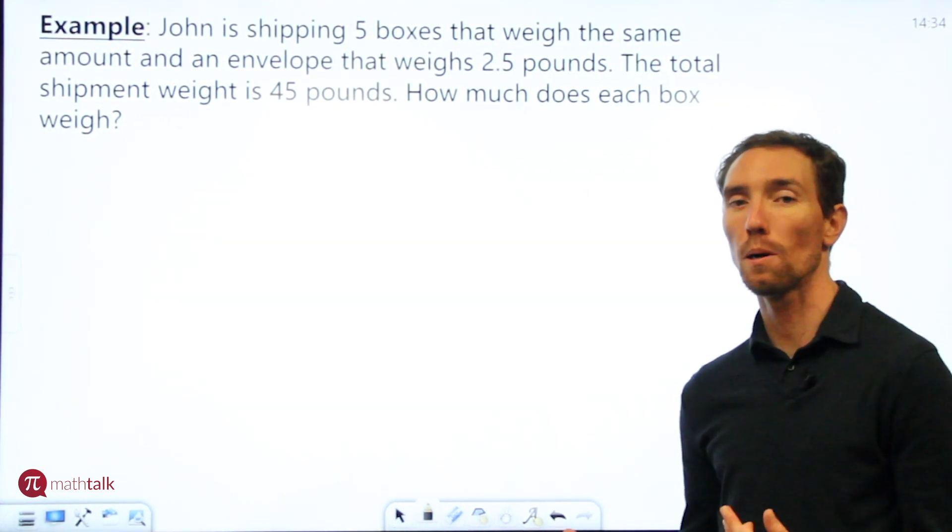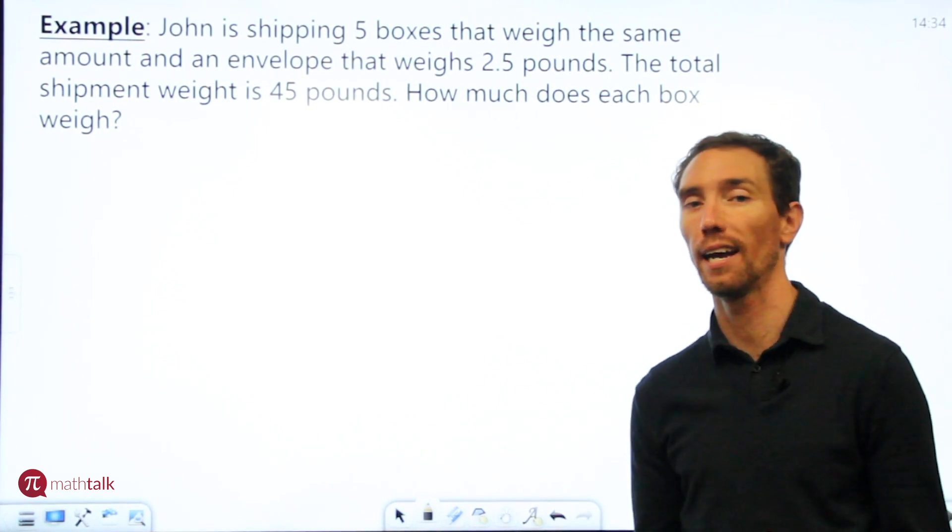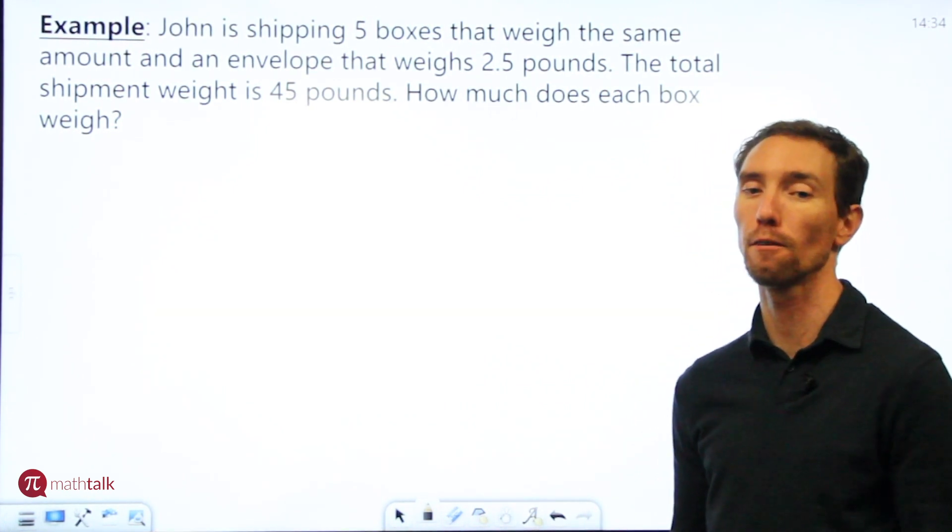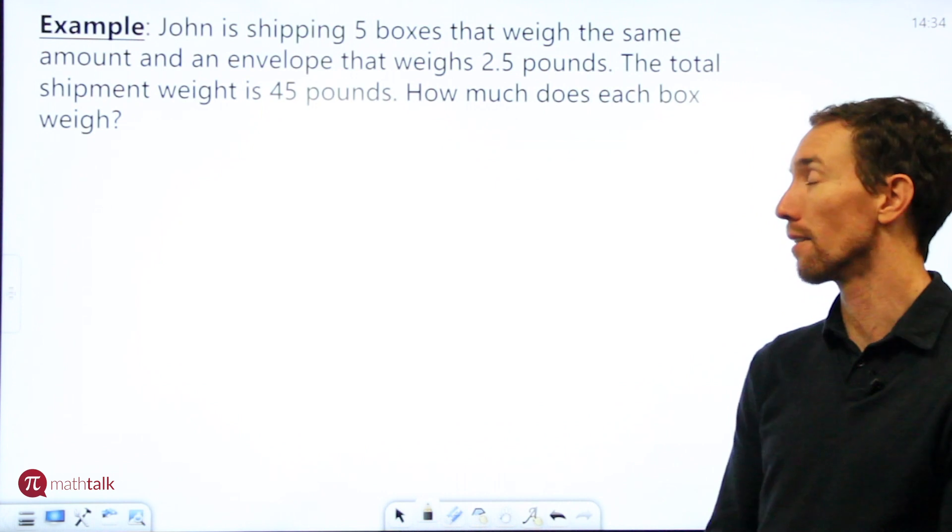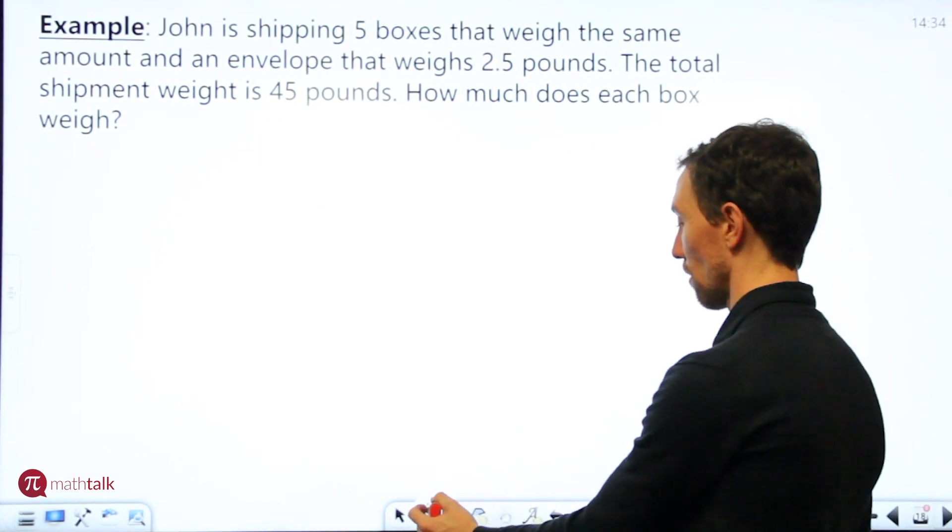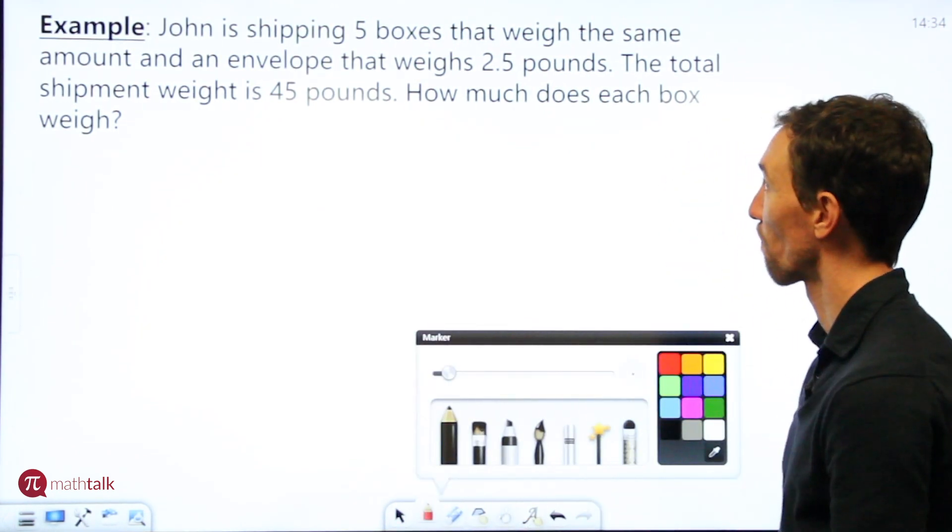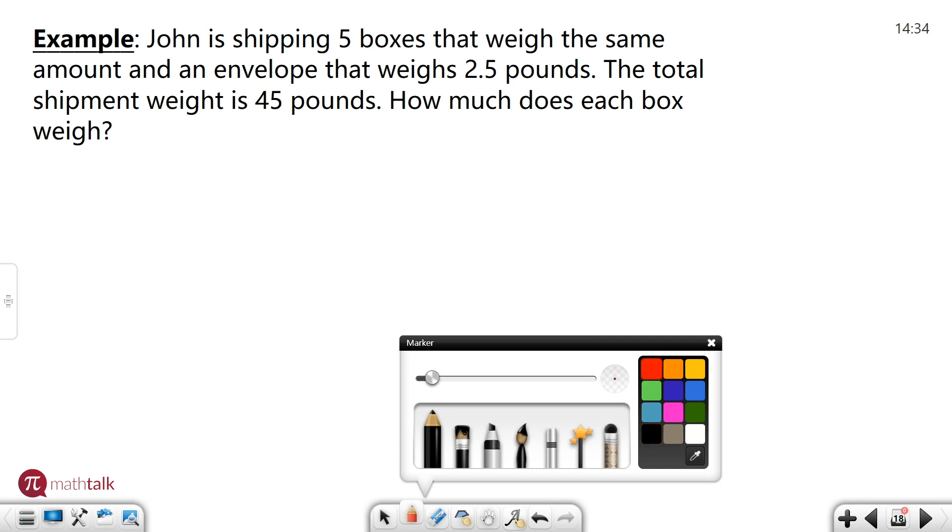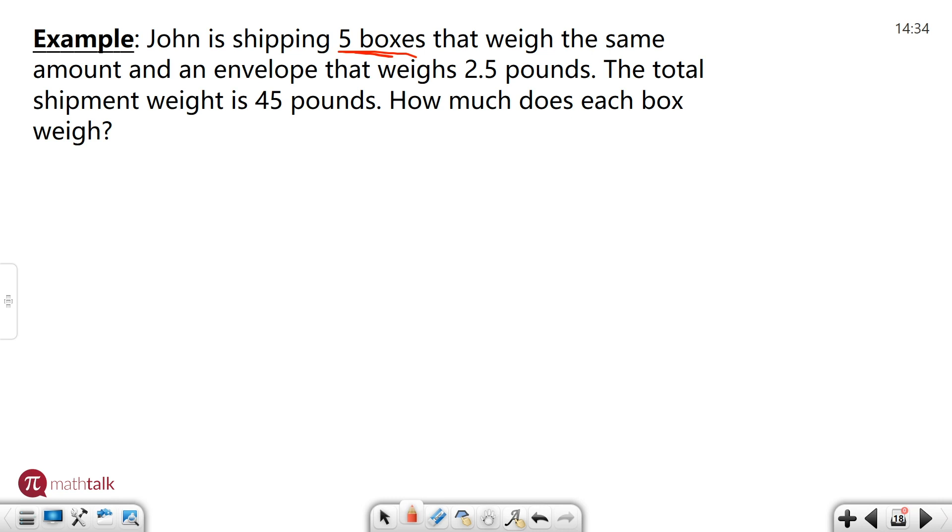So in word problems you really want to break down the problem as much as you can and pick out the important pieces of information to use to put together. So we're going to do that first. We're going to find out what is important in this word problem. So one of the things is we have five boxes that's going to become important because we need to know how much each box is. They all weigh the same amount and there's an envelope that weighs two and a half pounds and the total weight is 45 pounds.